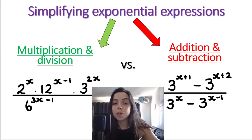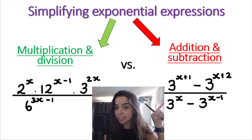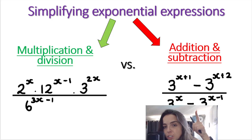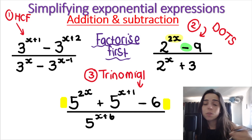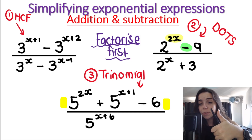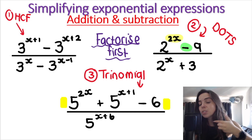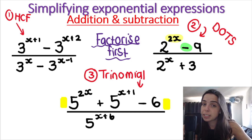In the previous video, I spoke about how when you simplify exponential expressions like this one, and you have pluses and minuses, you first have to factorize. All the normal types of factorizing — HCF (highest common factor), difference of two squares, trinomials — can all be asked, but in the context of exponential expressions.